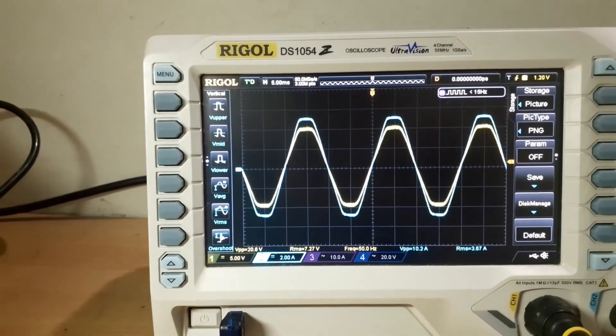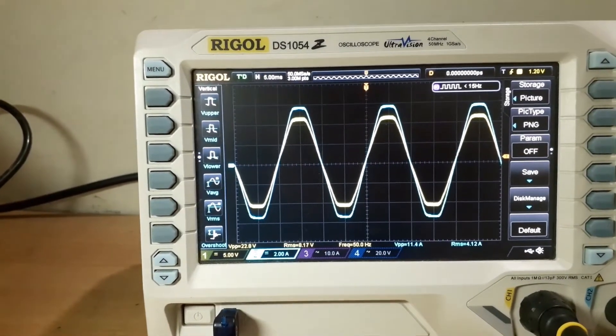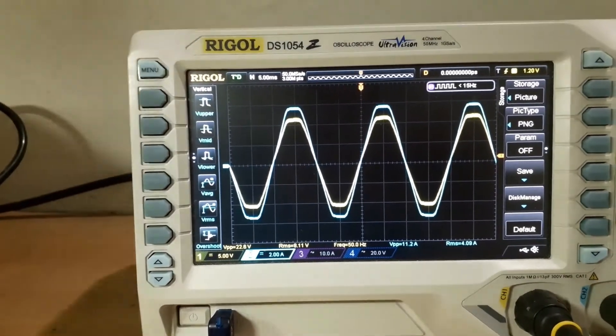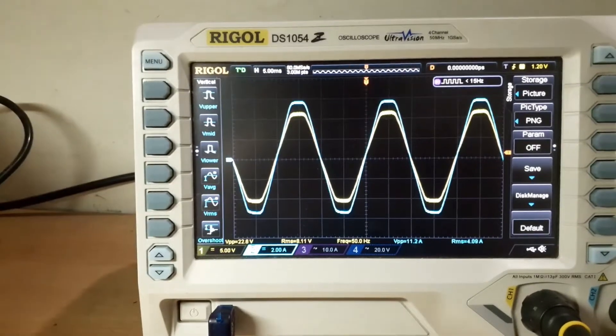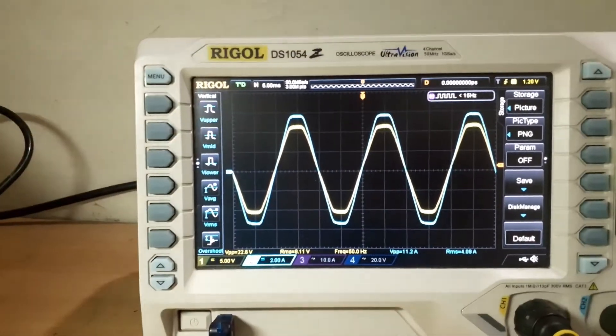Now we will set it to about 4 amps. Yeah, close to 4 amps, and you can see that the CT has dropped further so you cannot really rely on that.